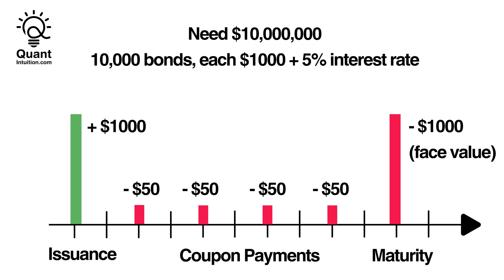Let's see how we can use a bond for our cookie business to finance further operations. Let's say our cookie company decides to issue 10,000 bonds, each with a face value of $1,000. Furthermore, we're going to use a 5-year duration. By multiplying the face value with the number of bonds issued, we see that we're creating bonds worth 10 million dollars, which is exactly the amount we need. This face value is what we promise to pay back at the end of the bond's term. In addition, we commit to an annual coupon payment of $50 per bond. These payments are a form of fixed interest paid out yearly based on the face value.